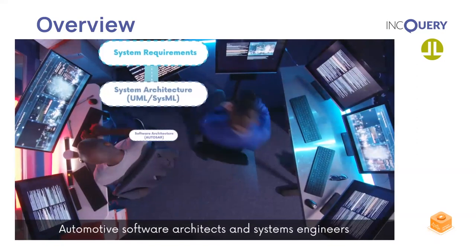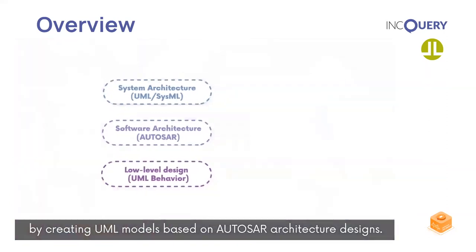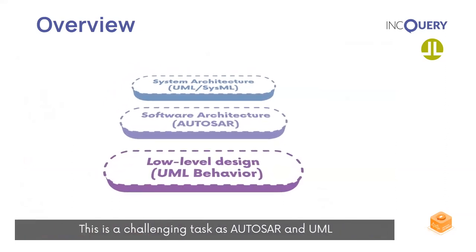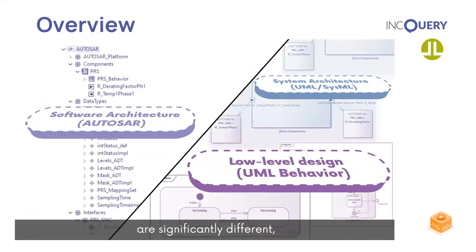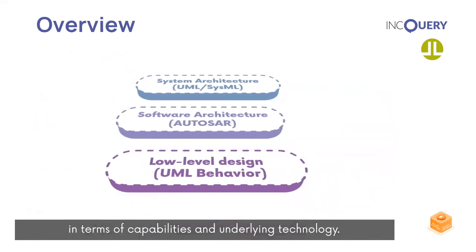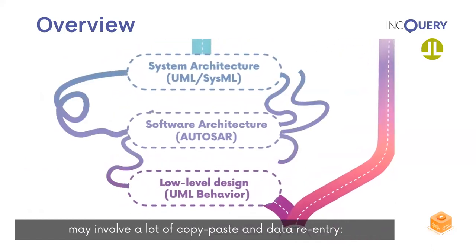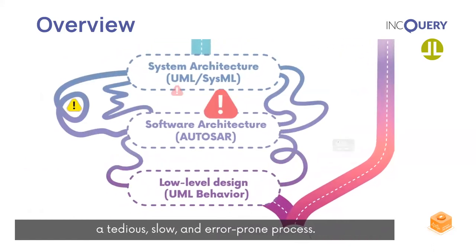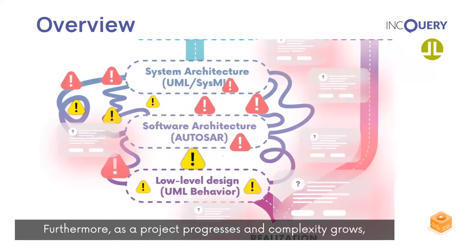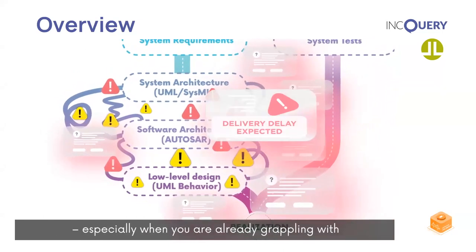Automotive software architects and systems engineers spend a lot of time on documentation by creating UML models based on AUTOSAR architecture designs. This is a challenging task as AUTOSAR and UML are significantly different in terms of capabilities and underlying technology. Doing this transition manually may involve a lot of copy-paste and data re-entry — a tedious, slow, and error-prone process.